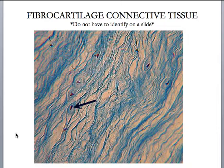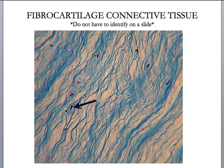Fibrocartilage is somewhat flexible because we can move our back in different directions. You also find fibrocartilage in the pubic symphysis — the pad of fibrocartilage that connects the two pubic bones together. It's protective and absorbs shock, but also allows some movement. That makes sense especially for females, so that the pelvic bones can somewhat shift during childbirth. So fibrocartilage — intervertebral discs — primarily absorbs shock.